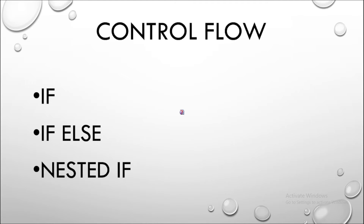Next are control flow statements. The normal flow of a Java program is from top to bottom. Control flow statements allow us to write specific conditions so that the flow changes to a particular location. There are three types: if, if-else, and nested else-if. An if statement checks whether a boolean condition is true; if true, it enters the block inside the braces. If-else means if a condition is satisfied, otherwise the else block executes. Nested else-if allows writing multiple conditions like else-if, else-if chained together.